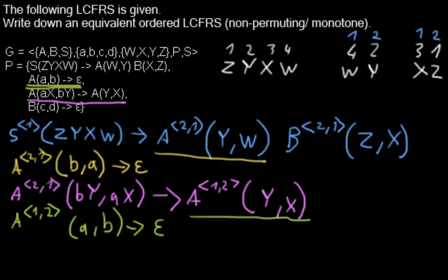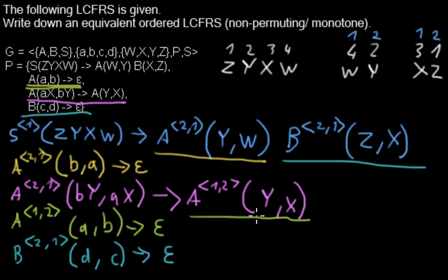And then the last thing is we have now this rule, and we need a rule where the B has been swapped, where the arguments of the B have been swapped. So this is for where the arguments have the order 2 and 1. And C and D now must be swapped - D and C - and the right hand side is empty.